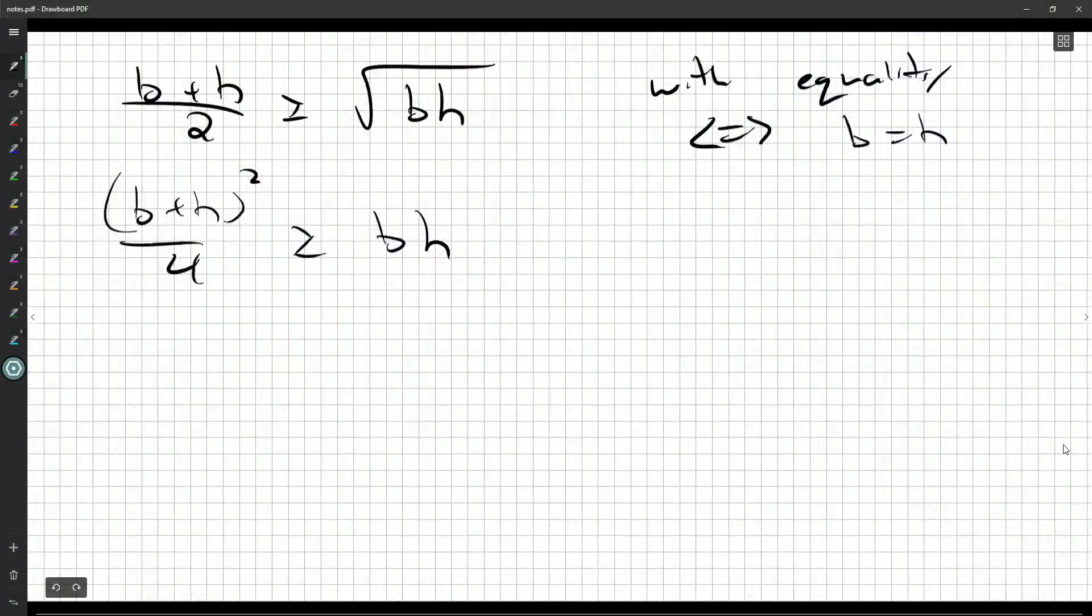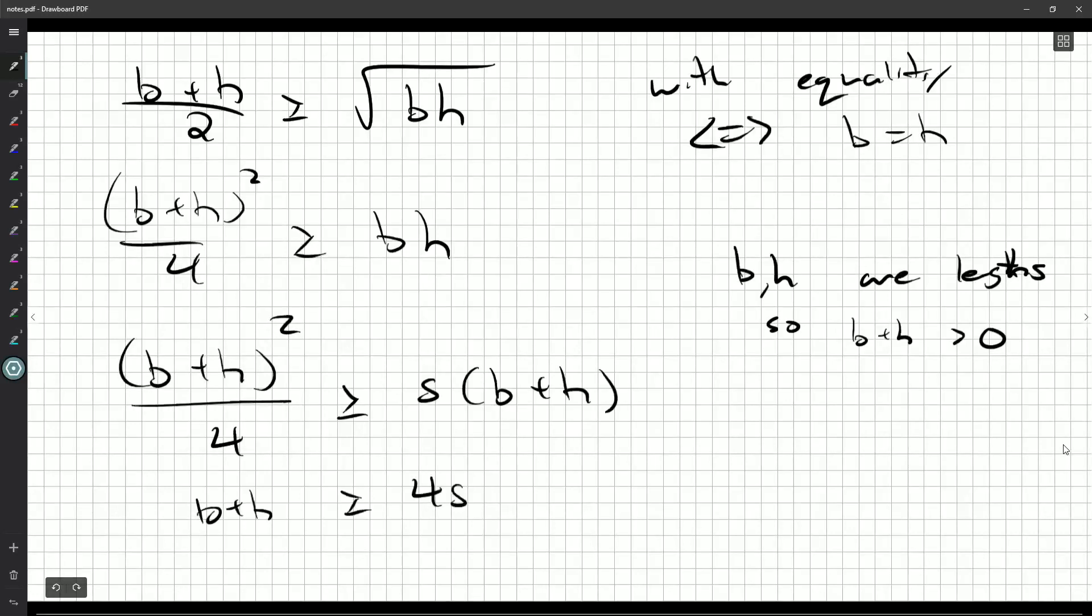But then we're sort of capping what bh can be. So I'm not exactly happy with that. But maybe we can convert. So we could say (b+h) squared over 4 is greater than or equal to s(b+h). b and h are lengths. So b + h is positive. This is definitely something I would include because I'm about to divide by it. So b + h is greater than or equal to 4s. I've also brought the 4 over to the other side.